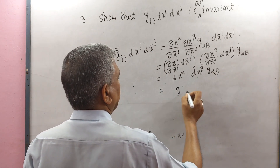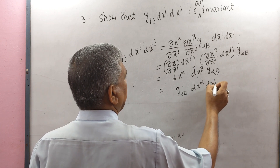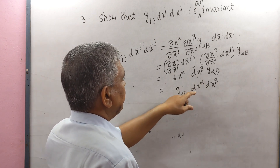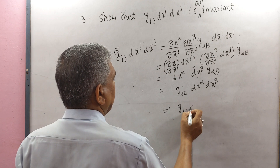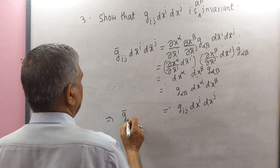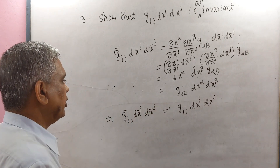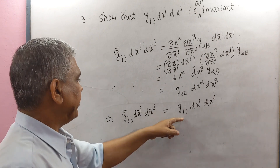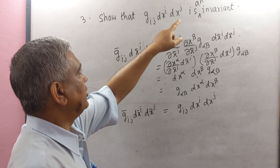Rearranging the dummy suffix α by I and β by J, we get g_IJ · dxI · dxJ on the right side, and ḡ_IJ · dx̄I · dx̄J on the left side. So in both systems of coordinates the Riemannian metric is the same. Therefore g_IJ · dxI · dxJ is an invariant. Proved.